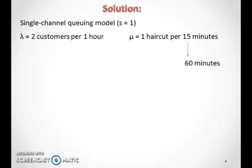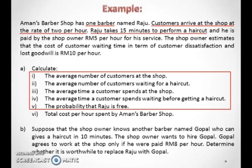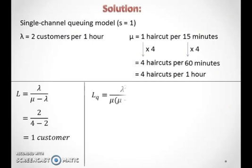Change 15 minutes to 60 minutes, which is 1 hour, by multiplying 15 by 4. Since 15 is multiplied by 4, one must also be multiplied by 4, so mu becomes 4 haircuts per hour. To calculate the average number of customers at the shop, the average number waiting for a haircut, the average time a customer spends at the shop, the average waiting time, and the probability that Raju is free, simply substitute the values of lambda and mu into the equations.